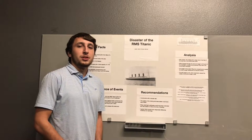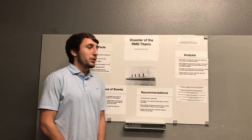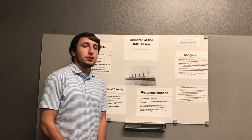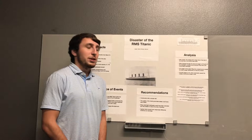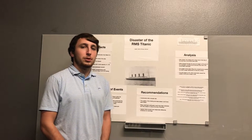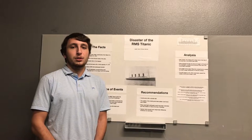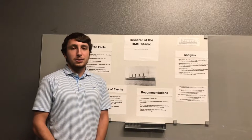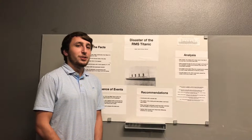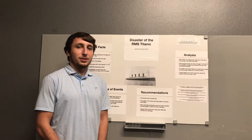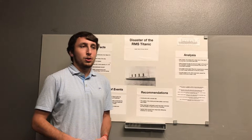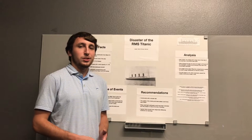Hi, my name is Logan. I'm going to be going over the analysis of the engineering disaster. Basically what happened is the Titanic used cheap brittle steel which would crack rather than bending or conforming when in contact with something. So when the Titanic made contact with the iceberg, it left a large hole in the front of the hull of the ship.